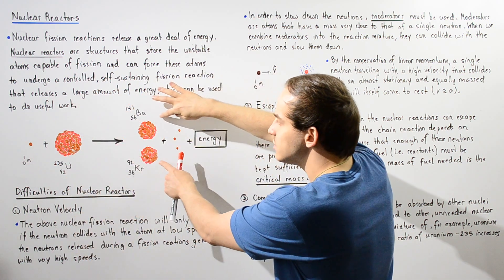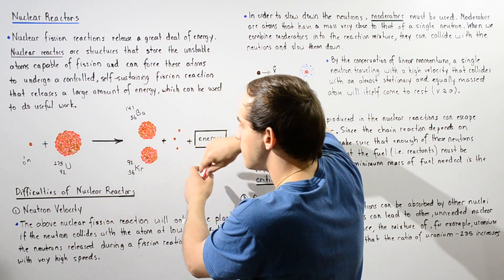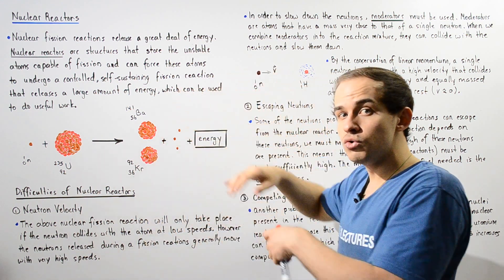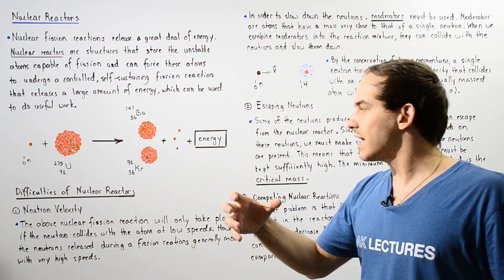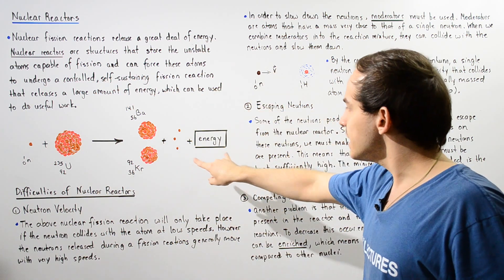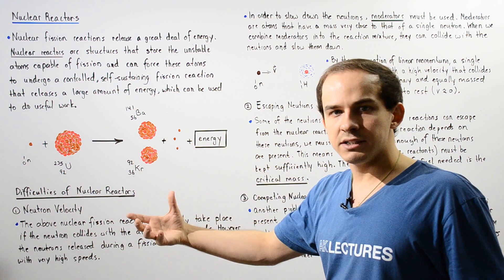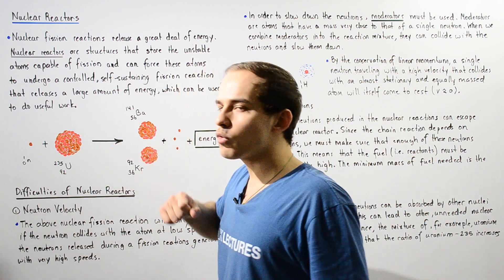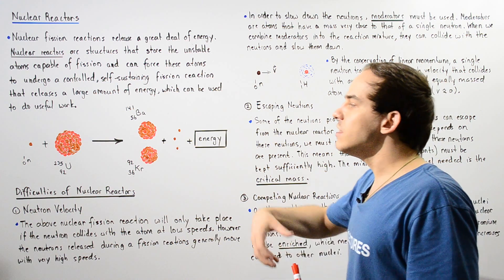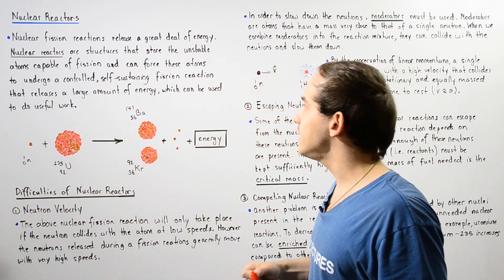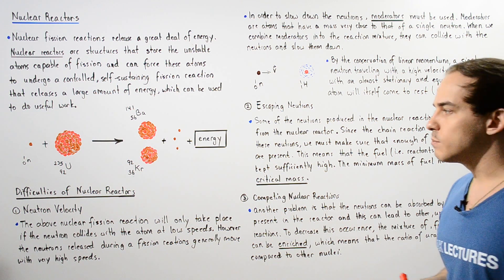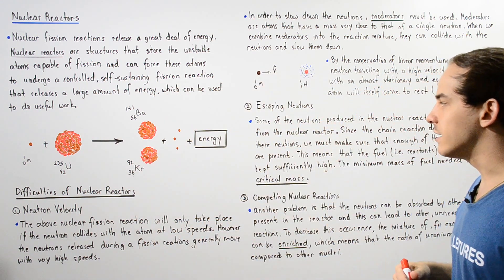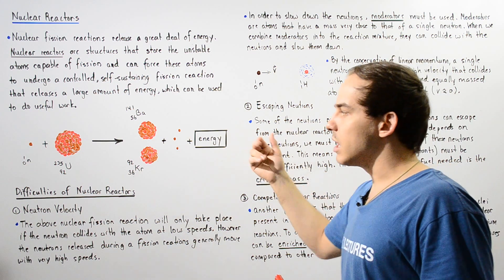That unstable nucleus then breaks down into two fragments — the barium atom and the krypton atom — and in the process releases several other neutrons; in this case, three neutrons as well as some energy. This energy can be collected, while these neutrons go on to further react with other uranium-235 atoms present, leading to a self-sustained chain reaction of fission. We end up with a lot of these atoms breaking down into barium and krypton, forming a lot of energy that we can collect or harvest.